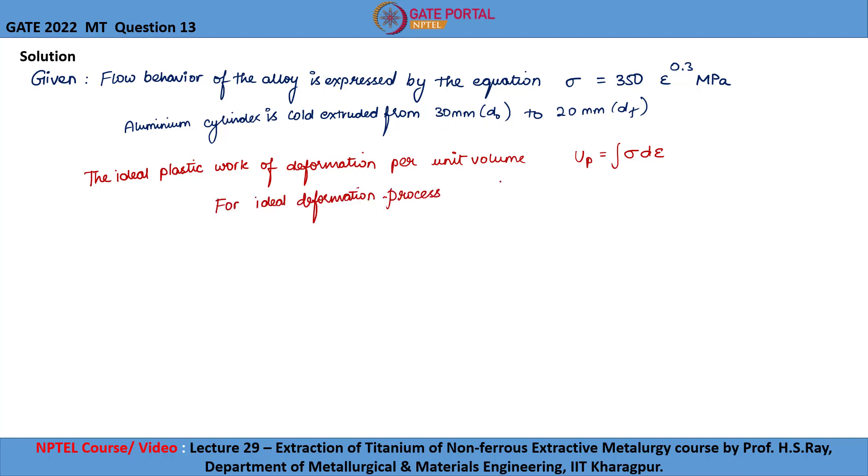For ideal deformation process, true strain epsilon equals ln r, where r is the reduction ratio which equals d naught by df.